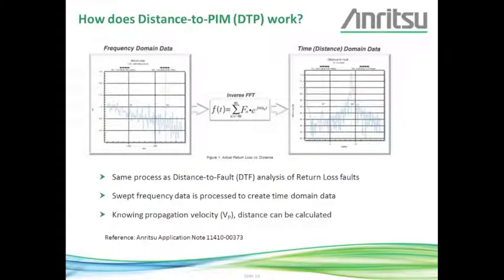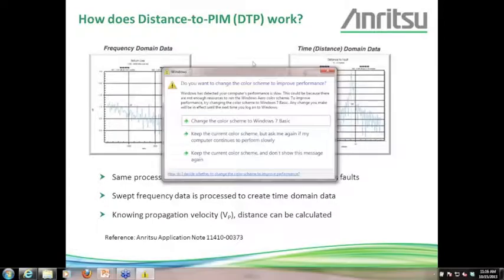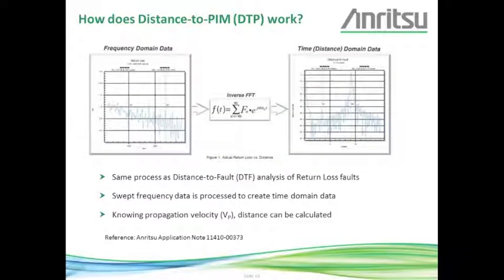Distance to PIM uses the same math deployed by Anritsu since 1997 for distance to fault. We start with frequency domain data, take a swept measurement, apply an inverse fast Fourier transform to convert it to time domain, and by knowing the velocity factor of the medium, calculate the distance to the PIM sources. An application note on the Anritsu website provides a good discussion of this technology and the math, which applies directly to Distance to PIM as well.